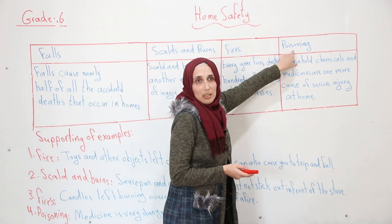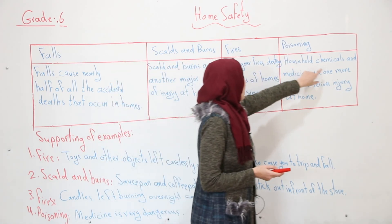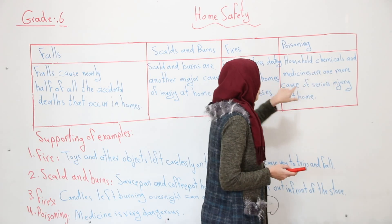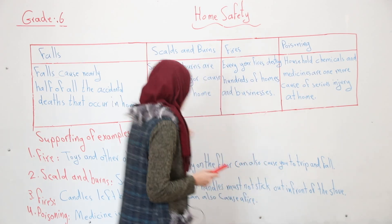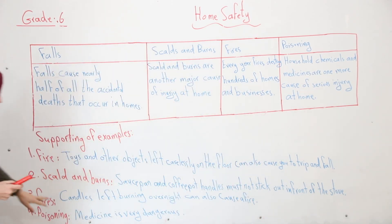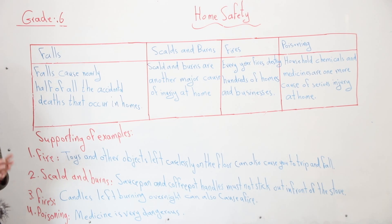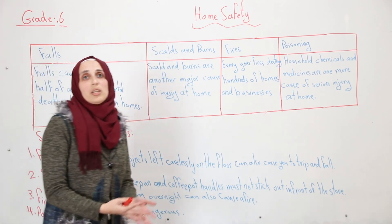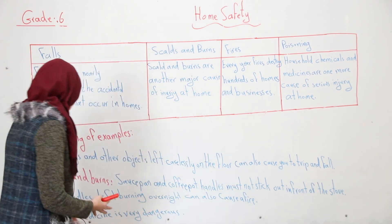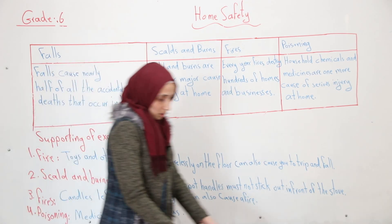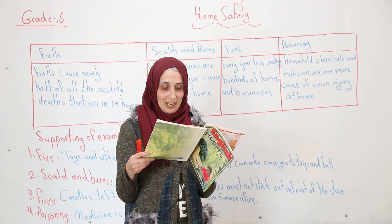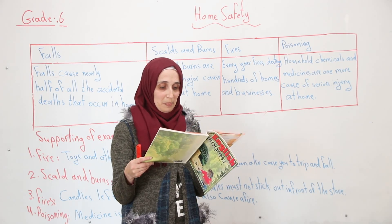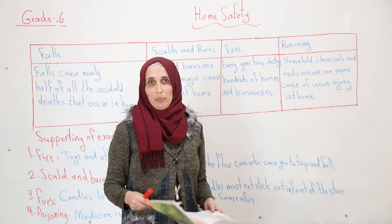Now, poisoning. Household chemicals and medicines are one more cause of serious injury at home. For example, medicine is very dangerous for us and for our children. Never take medicine unless a doctor prescribes it for you.